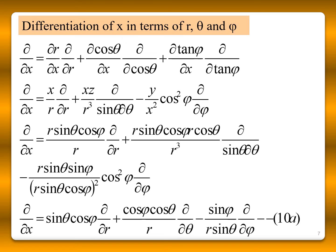Using all these terms, ∂/∂x can be represented by substituting the values of ∂cosθ/∂x, ∂tanφ/∂x, and the differentials of cos θ and tan φ. After simplification: ∂/∂x = sinθ cosφ (∂/∂R) + (cosθ cosφ / R)(∂/∂θ) − (sinφ / R sinθ)(∂/∂φ).